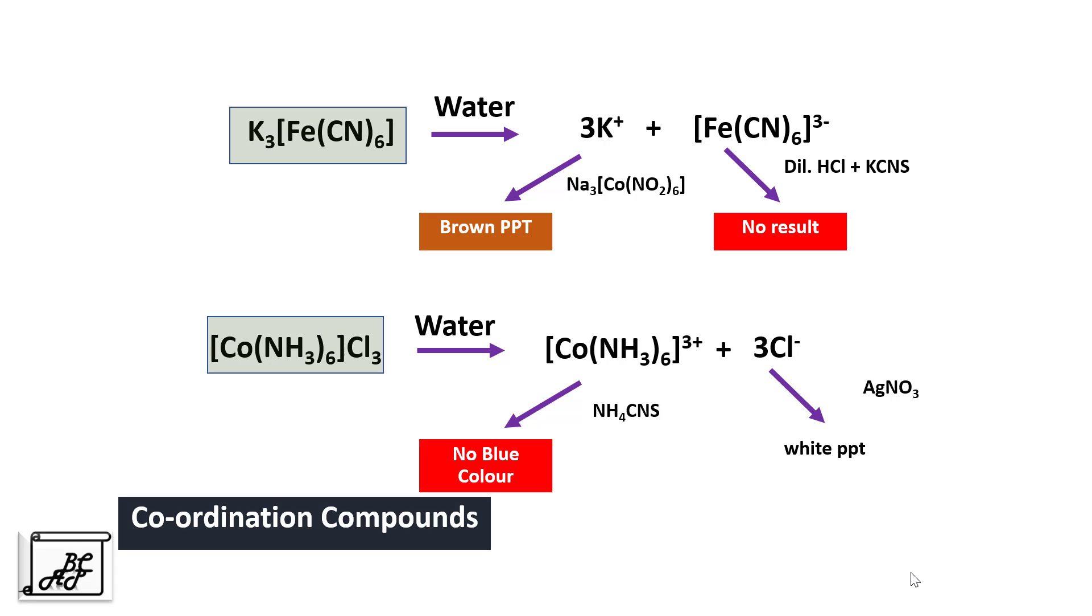The difference between double salt and a coordination compound is, in solution, the double salt breaks up and forms constituent simple ions, whereas in case of coordination compound, it breaks up partially and forms at least one complex ion along with simple ions. In case of double salt, it is stable only in the crystalline state and loses its identity in solution, whereas in case of coordination compound, it is stable in crystalline state and retains its identity even in solution.